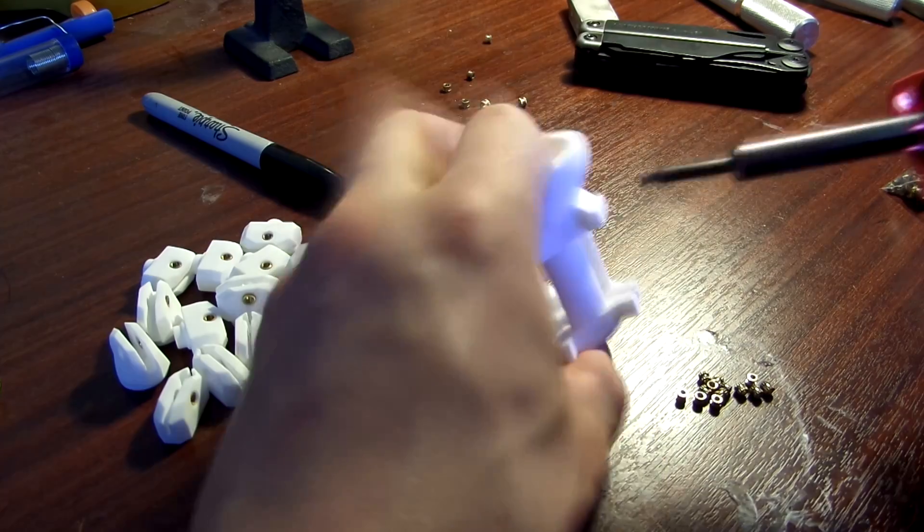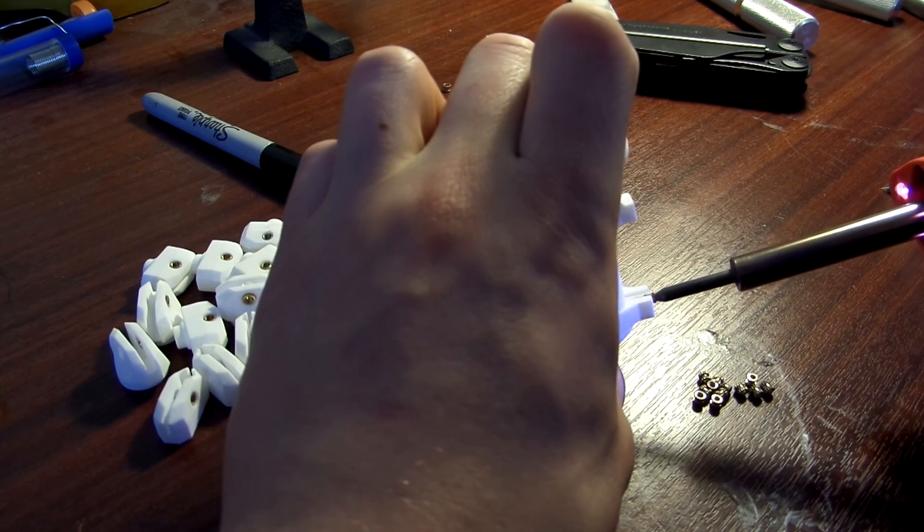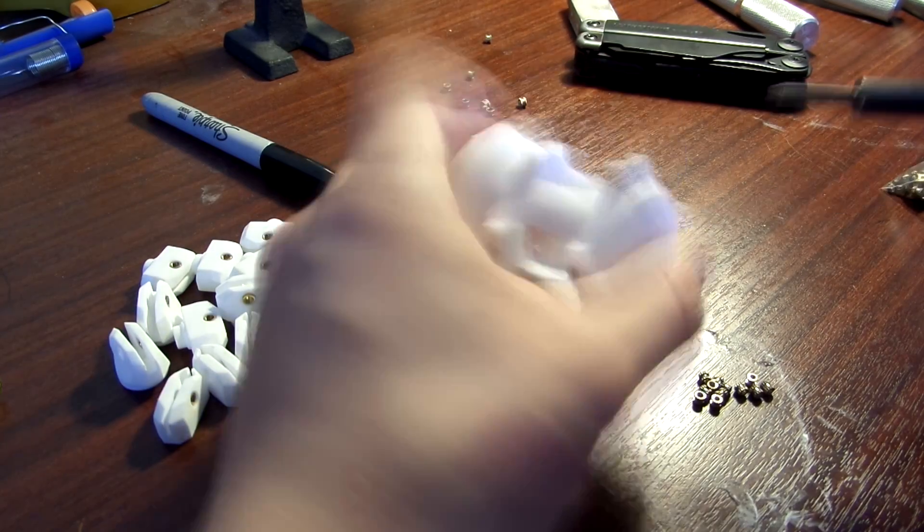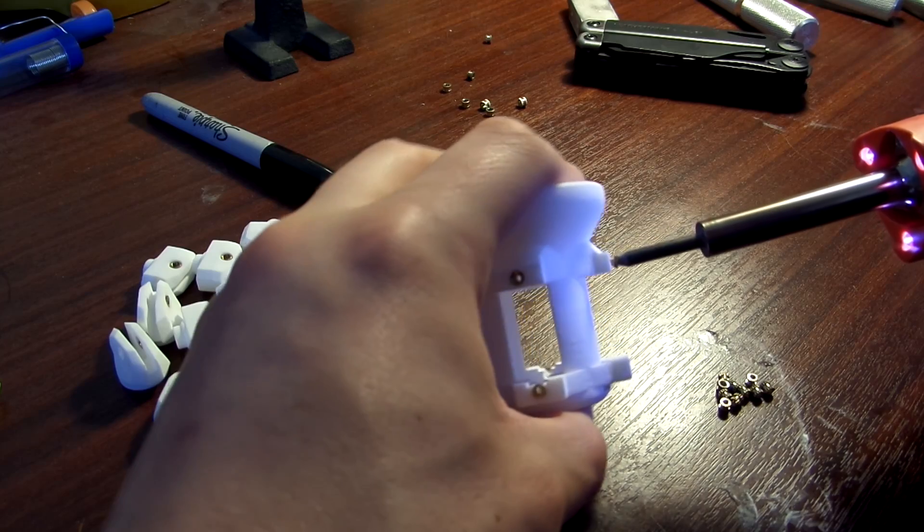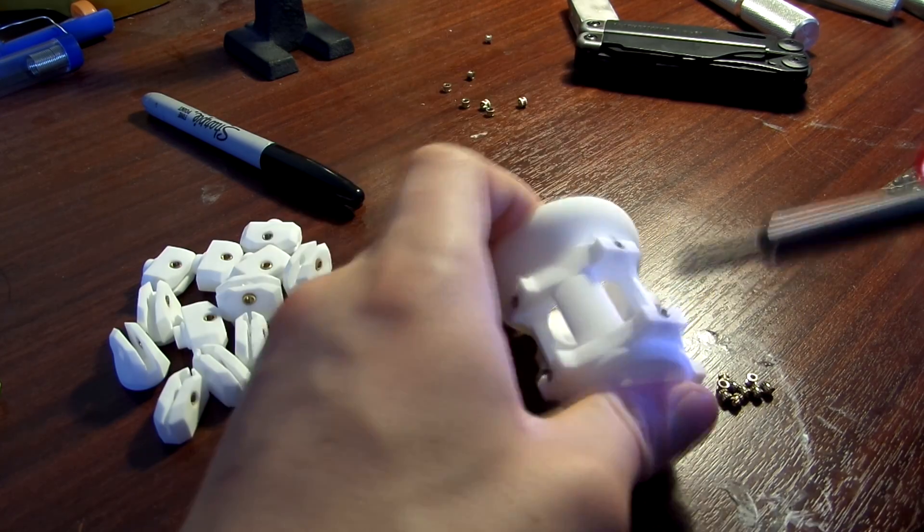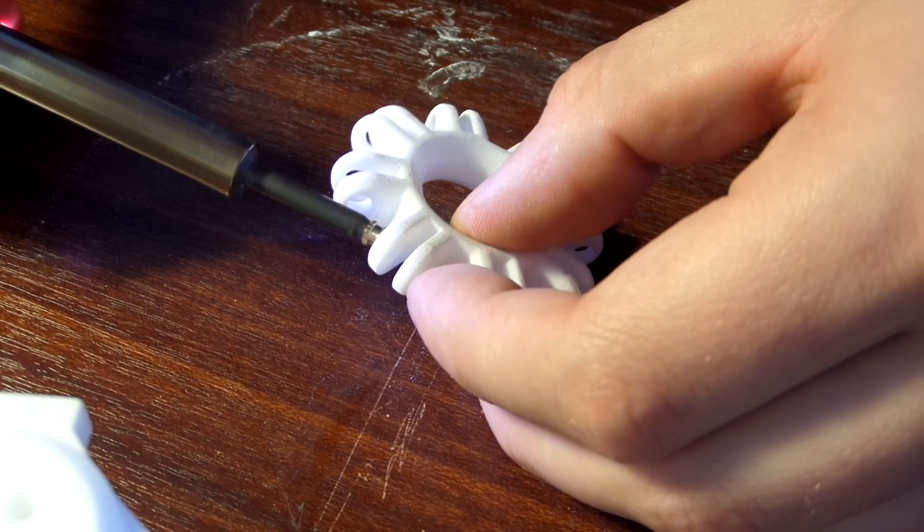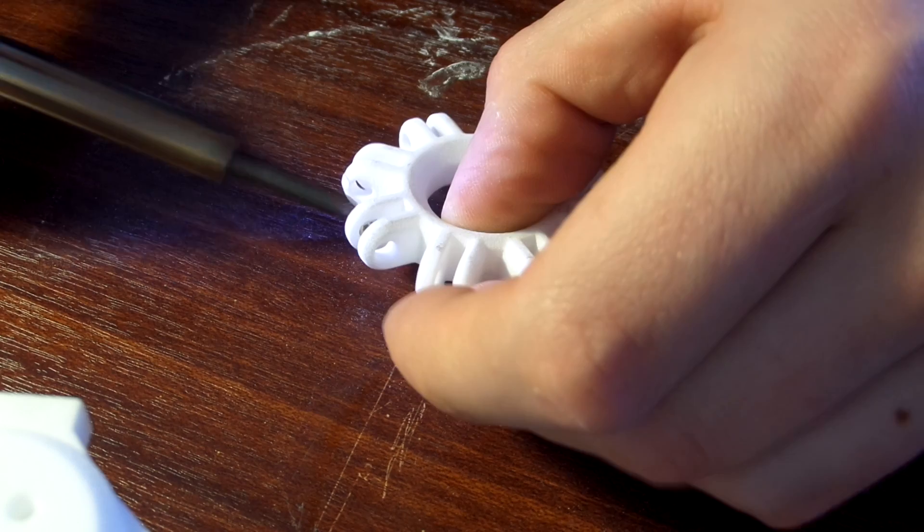I bought a load of these little threaded inserts off Amazon. I got them from Sourcing Map which is where I get a lot of stuff actually off Amazon. They're really cheap, just turned on little inserts, and using a soldering iron is actually able to melt them into the 3D printed nylon. This gives a really great thread that I can just thread straight into and not have to worry about damaging the nylon at all.